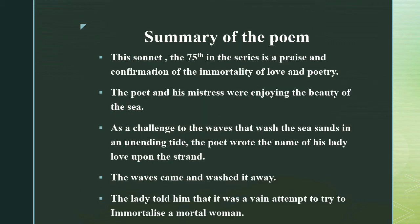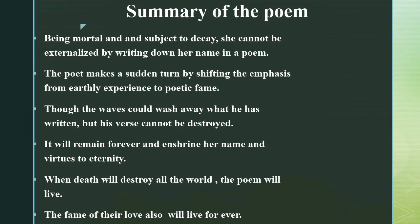To summarize, this sonnet — the 75th in the series — is a praise and confirmation of the immortality of love and poetry. The poet and his mistress were enjoying the beauty of the sea. He wrote the name of his lady love upon the strand; the waves came and washed it away. The lady told him it was a vain attempt to immortalize a mortal woman. The poet makes a sudden turn, shifting emphasis from earthly experience to the poetic theme: though waves could wash away what he has written, his words cannot be destroyed. When death destroys all the world, the poem will preserve the fame of their love forever.